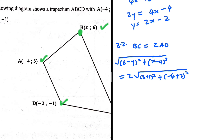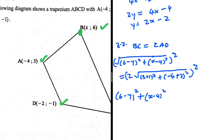Instead of solving what's inside the square roots, let's square both sides first and see what we get. When we square both sides we get: (6 − y)² + (x − 4)² = 2² × [(3 + 1)² + (−4 + 2)²].